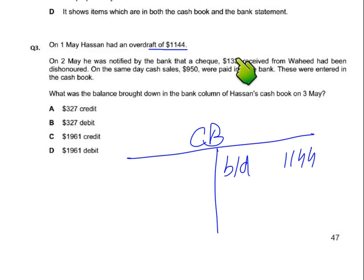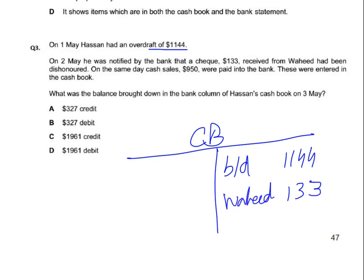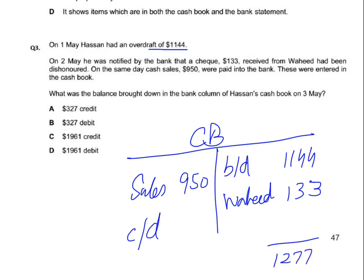Jab customer se check aya tha, entry hogi: bank debit, Waheed credit. Ab jab wo check bounce ho gaya, toh bank ko kam karenge. Credit side: 1144 plus 133 equals 1277. Aur 1277 minus 950 equals 327 — yeh hai balance bd.